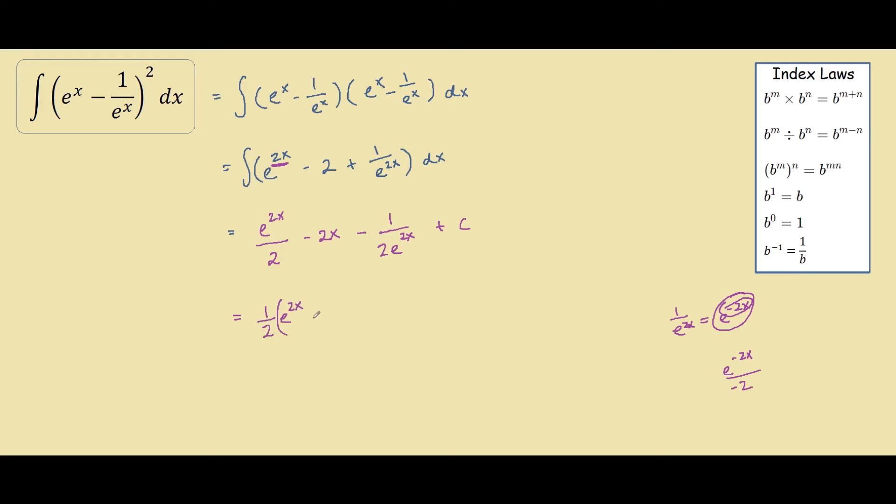So we have a half of e^(2x) minus x minus, we could express this as e^(-2x) plus c. And that is your answer.